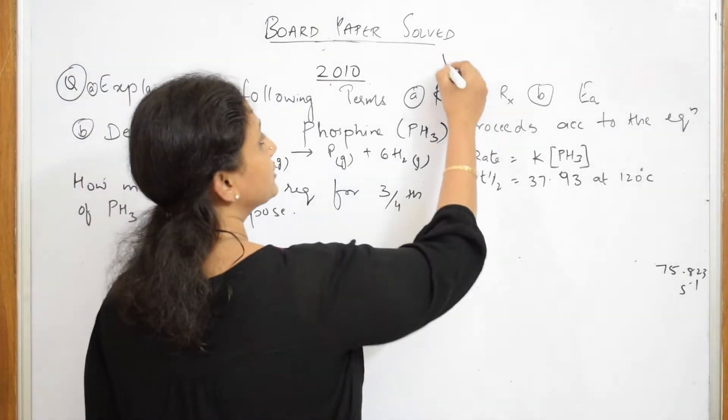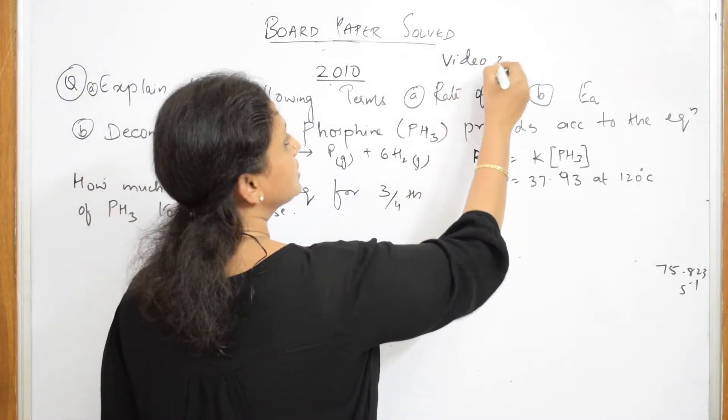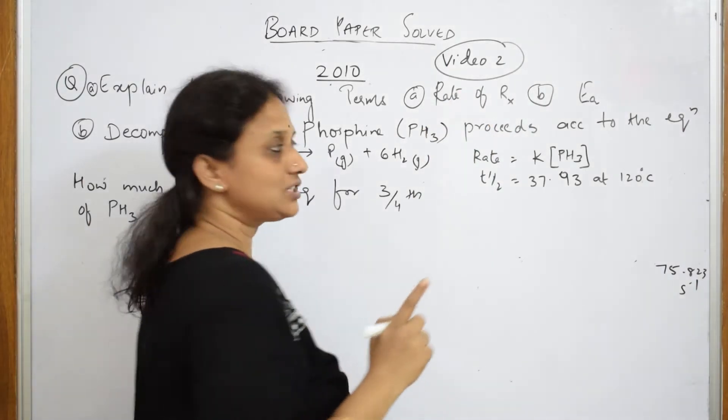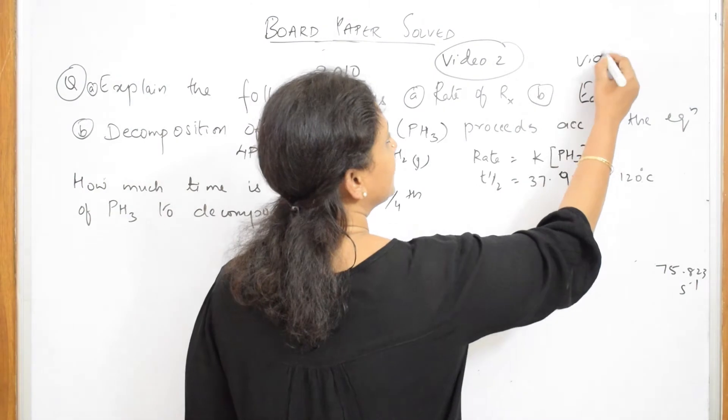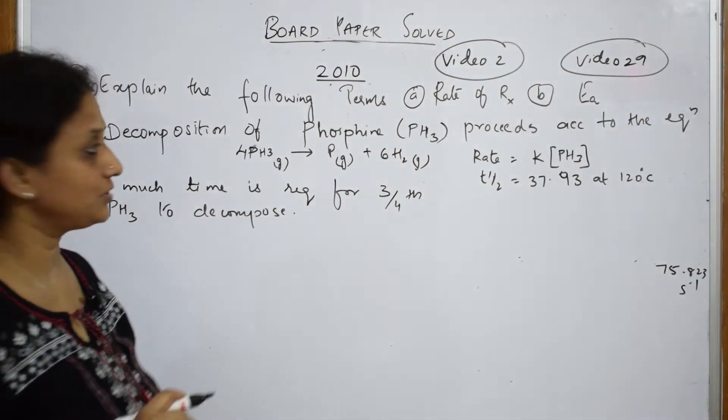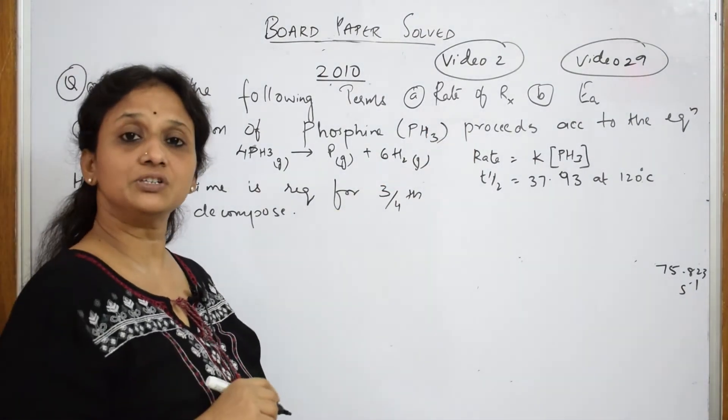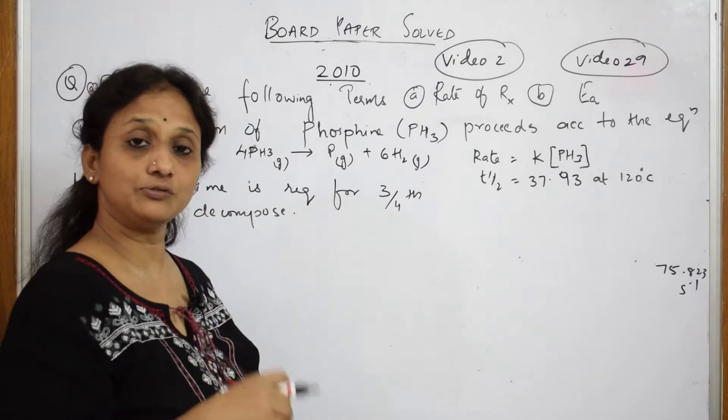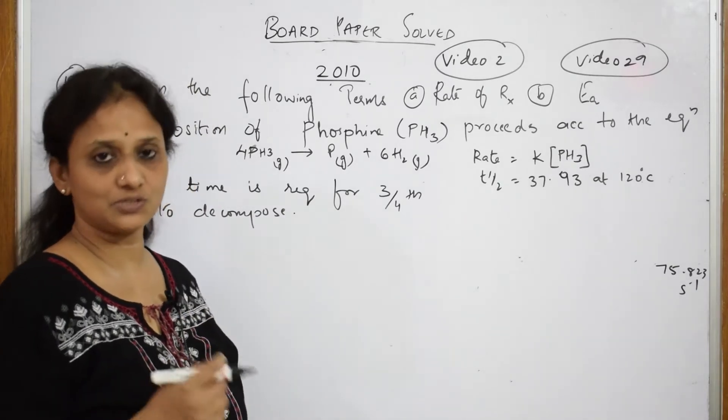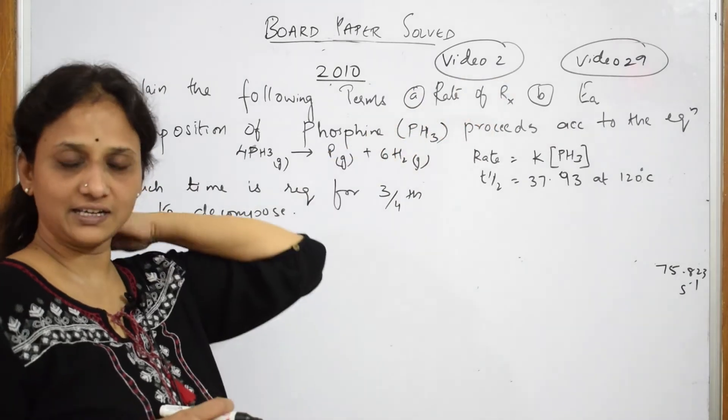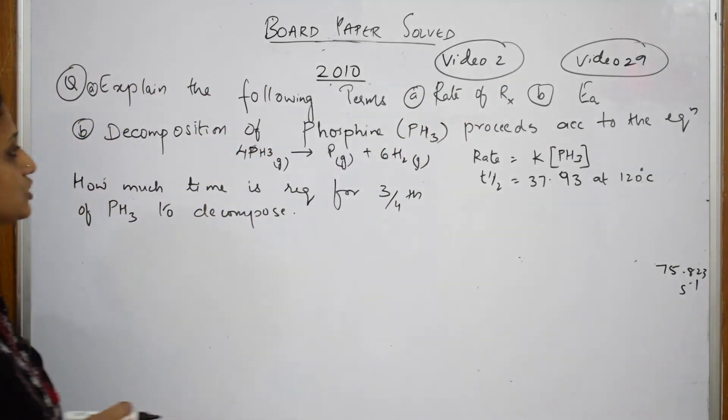I think this particular rate of reaction you can watch in a video which is numbered as 2, and activation energy we have numbered it as 29, so video number 29. Please watch those, I have clearly explained the definition. I have also given you the information regarding how to write for activation energy, I have also given you the formula for activation energy.